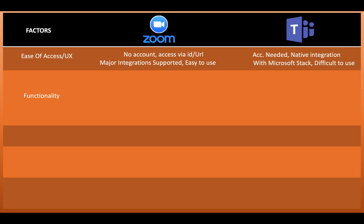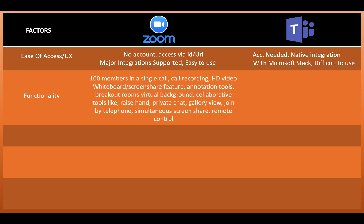The next factor is functionality. Zoom is a very functional software — you can support up to 100 members in a single call, you have a call recording function, HD video, a whiteboard and screen share feature, and different annotation tools through which you can collaborate and add notes to a meeting. This annotation tool is available for both participants and the host. You also have breakout rooms and a virtual background.